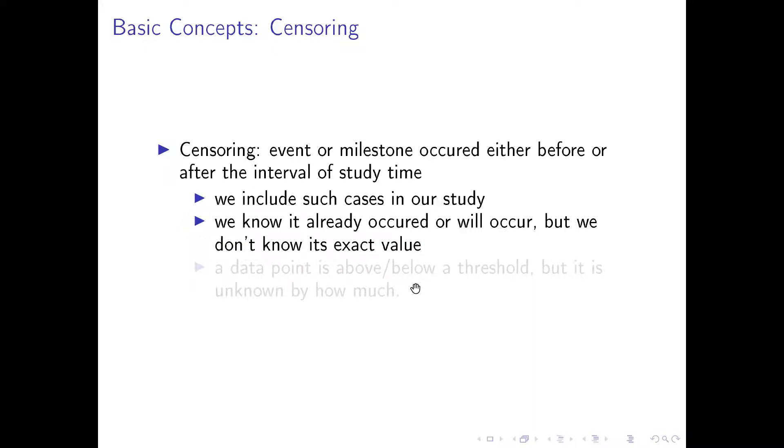We know it already occurred or will occur. When we say will occur, that means right censoring. But we don't know its exact value, exact time when it occurs or occurred. A data point is above or below a threshold, but it is unknown by how much. Here we're talking about time to event. So roughly we know it is either before our study time or after, but it is unknown by how much.